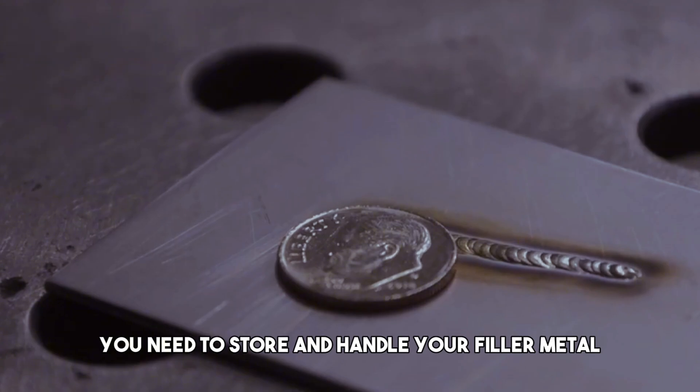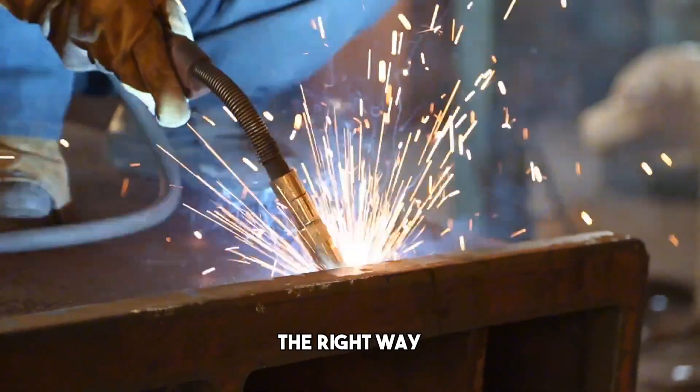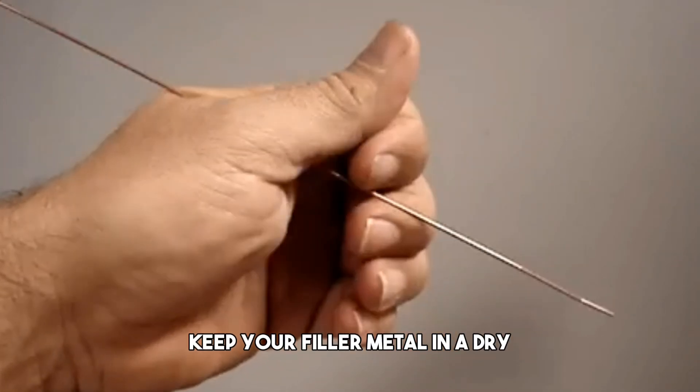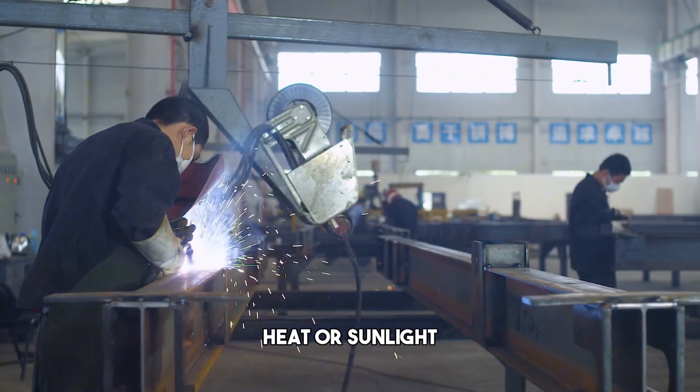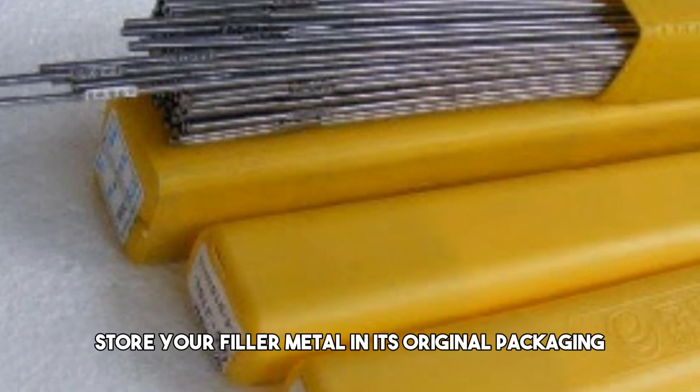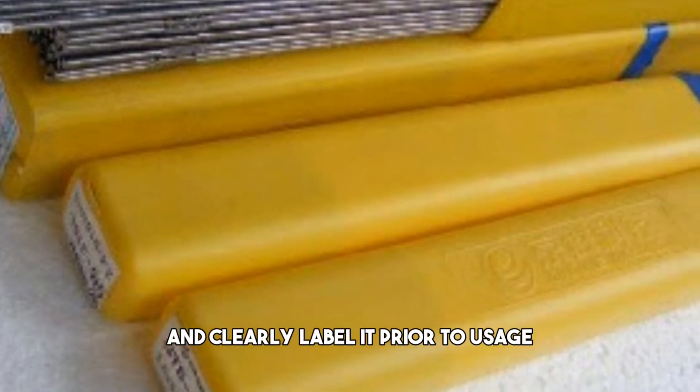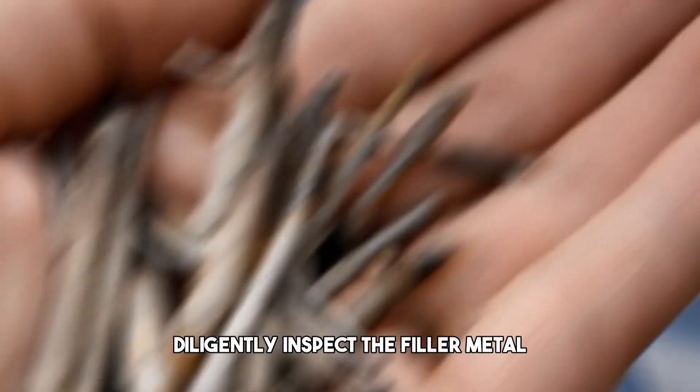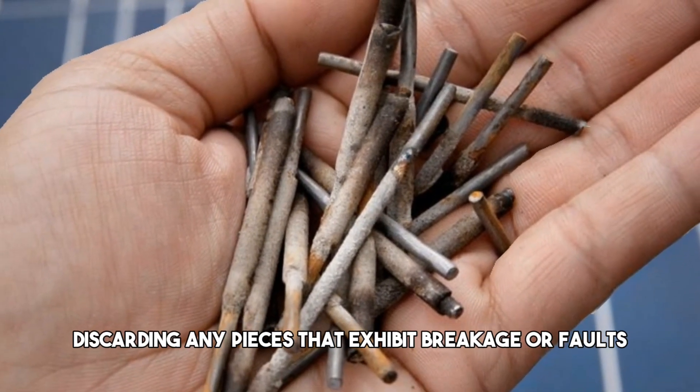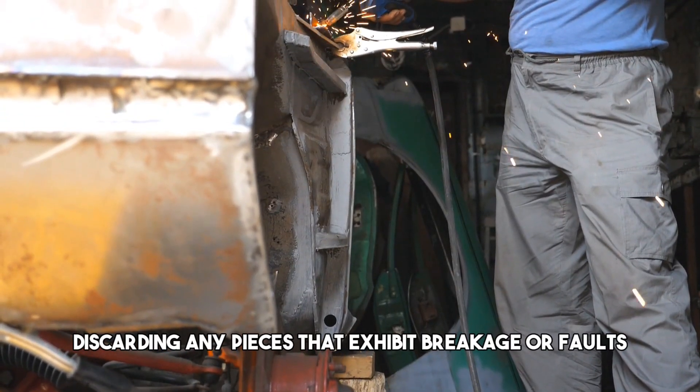To prevent these problems, you need to store and handle your filler metal the right way. Keep your filler metal in a dry, cool, and clean place and keep it away from moisture, heat, or sunlight. Store your filler metal in its original packaging and clearly label it. Prior to usage, diligently inspect the filler metal, discarding any pieces that exhibit breakage or faults.